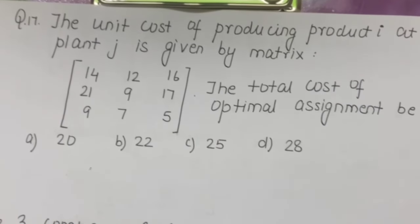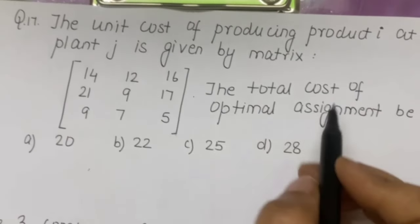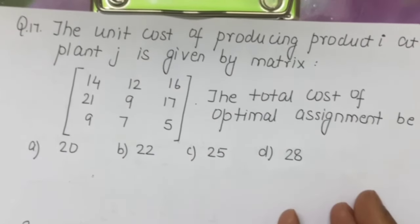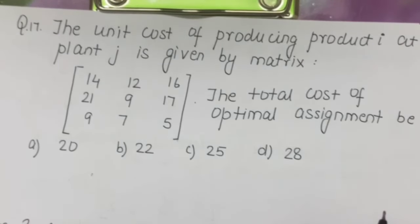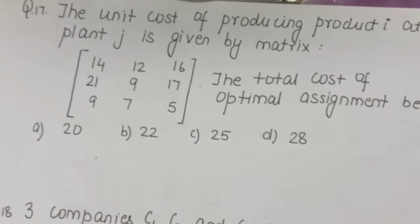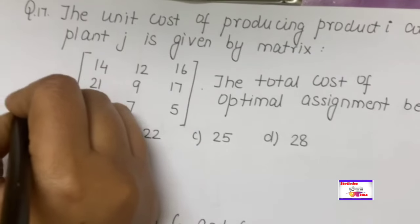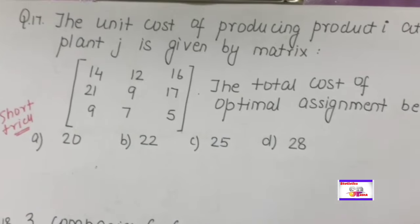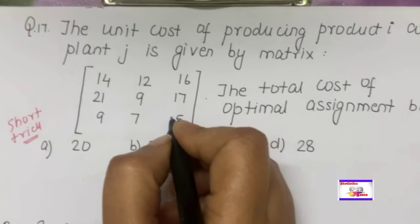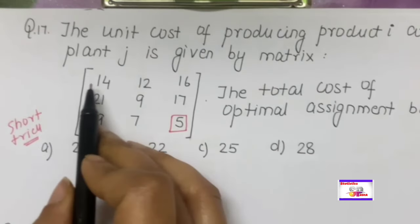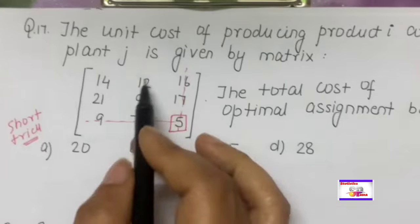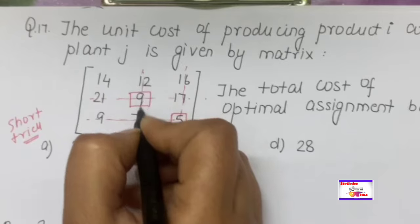The unit cost matrix for assignment problem is given; find the optimal assignment total cost. Use the Hungarian method — subtract the smallest element from each row and column. Short trick: in the given matrix, mark the smallest cost (5), assign it, eliminate that row and column. Repeat for the remaining matrix — smallest cost is 8, assign and eliminate. Then smallest remaining is 9, and finally 10.